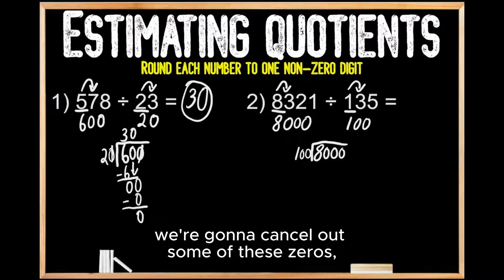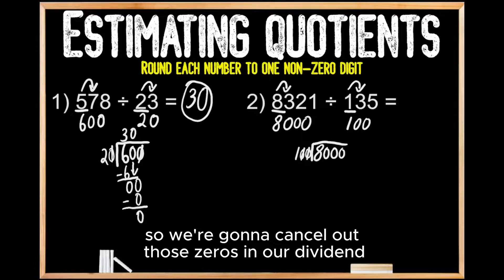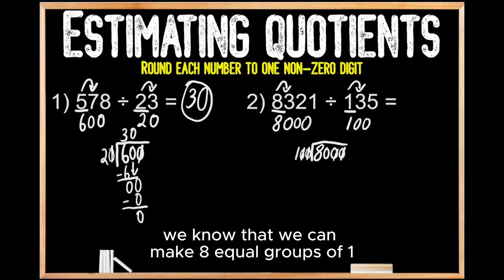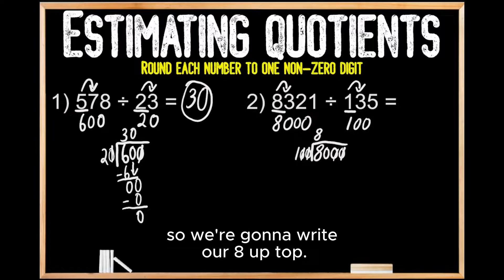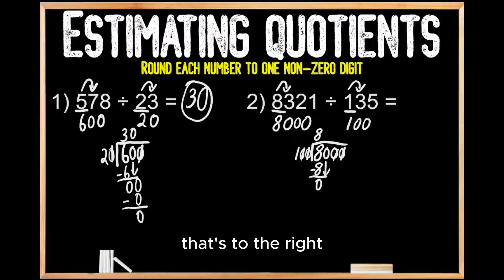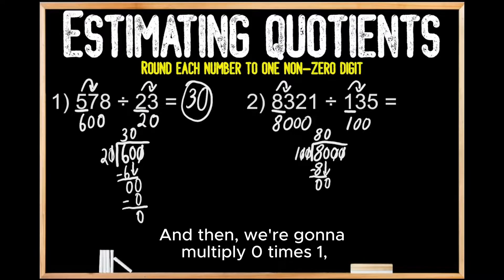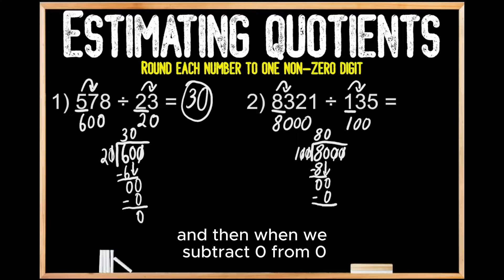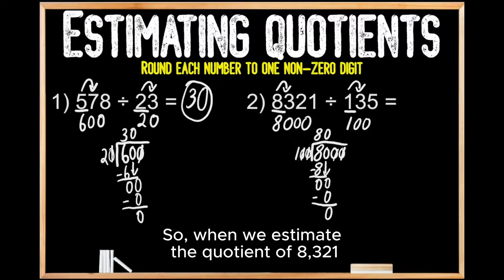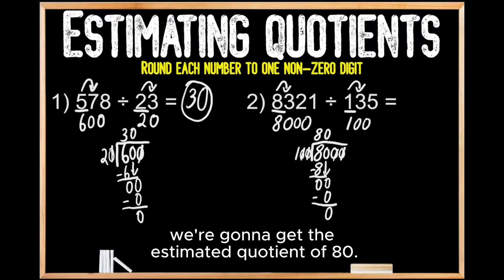Just like we did with our first problem, we're going to cancel out some of these zeros. In our divisor we have two zeros that we can cancel out, so we're going to cancel out those zeros in our dividend as well. So now we're going to be dividing 80 by 1. Working through the division steps, we know we can make 8 equal groups of 1 out of 8, so we write 8 up top. 8 times 1 gives us 8, and when we subtract 8 from 8 we're left with 0. We bring down our digit to the right, giving us 0 again. We can't make a group of 1 out of 0, so we write 0 up top, multiply 0 times 1 to get 0, and subtract 0 from 0, leaving 0. Since we don't have any more digits to bring down, we're done. So when we estimate the quotient of 8,321 divided by 135, we get an estimated quotient of 80.